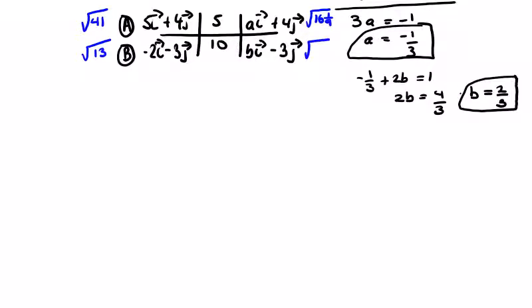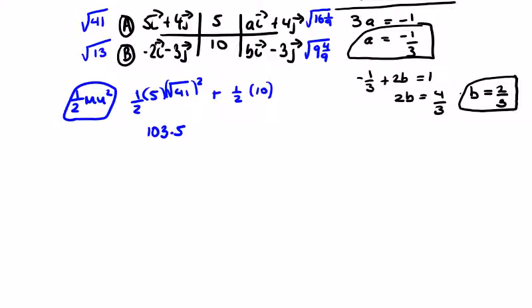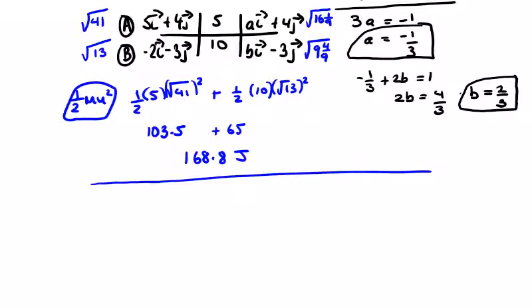After collision, A has √(1/9 + 16) and B has √(4/9 + 9). Initial kinetic energy: (1/2)(5)(√41)² = 2.5 × 41 = 103.5, plus (1/2)(10)(√13)² = 5 × 13 = 65, giving 168.5 joules.